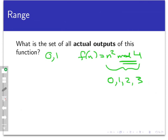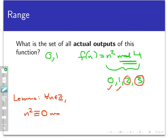So that makes us think, well, maybe there are not a lot of outputs to this at all. 0 and 1 certainly are actual outputs. What about 2 or 3? Could those occur as outputs of this function? It turns out the answer is no, and I'm just going to state this as a lemma that you can prove on your own if you want to. And that lemma just says that for every integer n, n squared is going to be congruent to either 0 mod 4 or 1 mod 4.